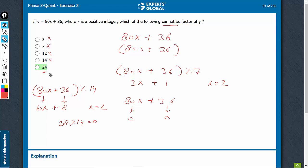So by elimination, we have the answer, but still, mathematically, let us see why this should be the right answer. See, 80x, when divided by 24, will lead to a remainder of 8x and 36 will lead to a remainder of 12.